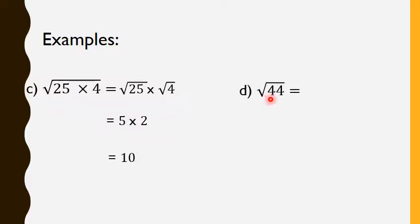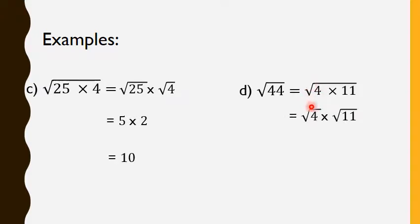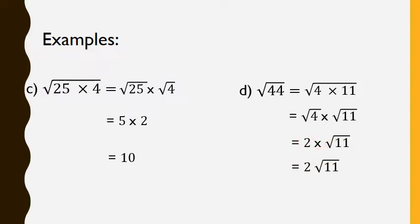Now, radical 44. We can decompose 44 into 4 times 11. So we say radical 4 times 11. We apply the rule: equals to radical 4 times radical 11. Radical 4 is 2 because 4 is 2 squared. And 11 is not a perfect square, so we write it directly as radical 11. So, 2 times radical 11 equals to 2 radical 11.